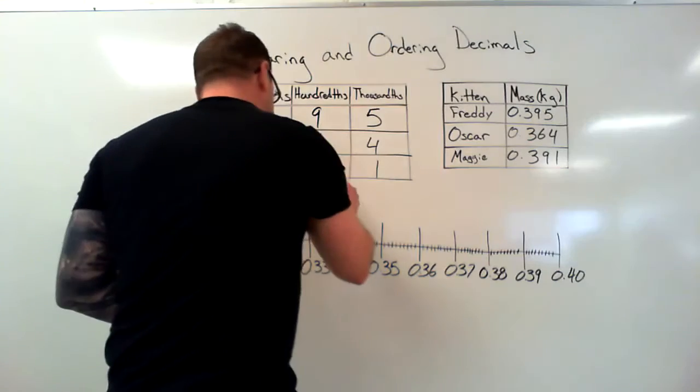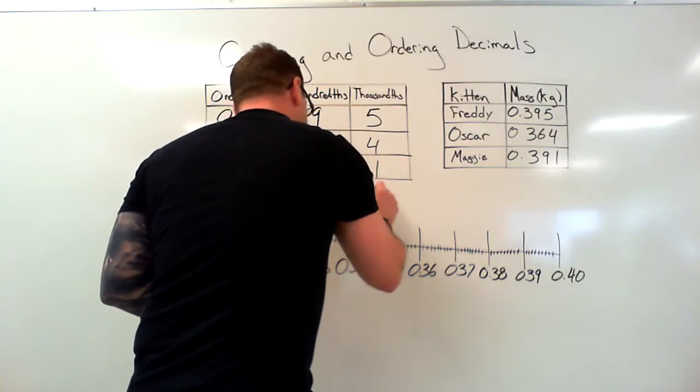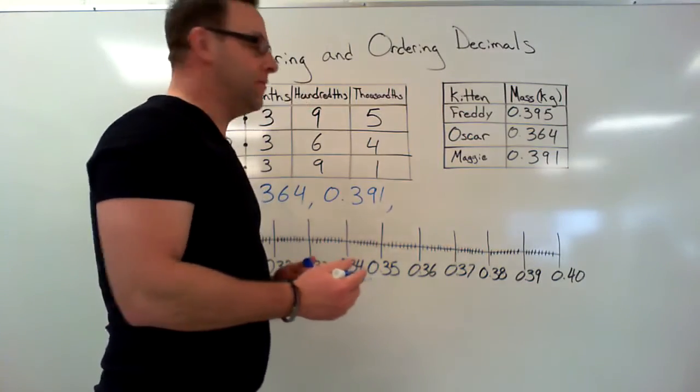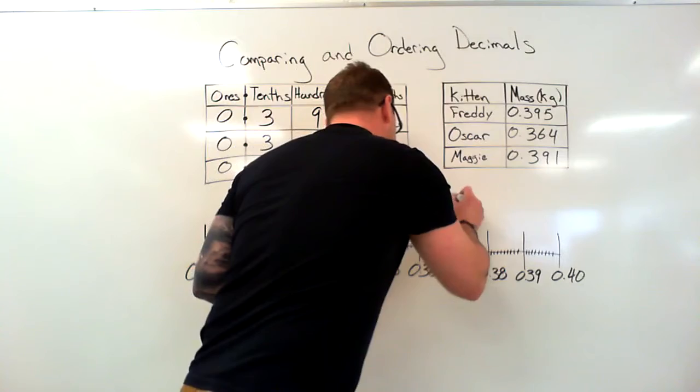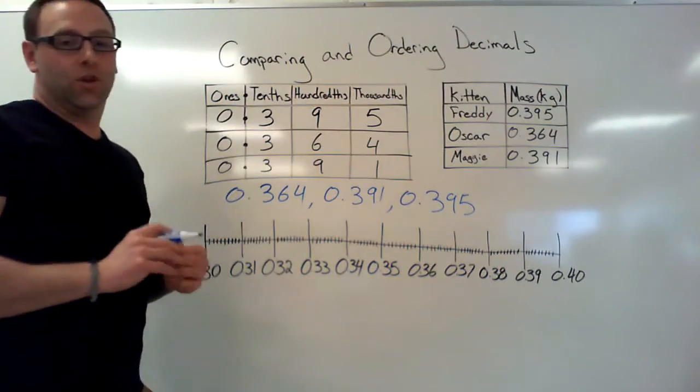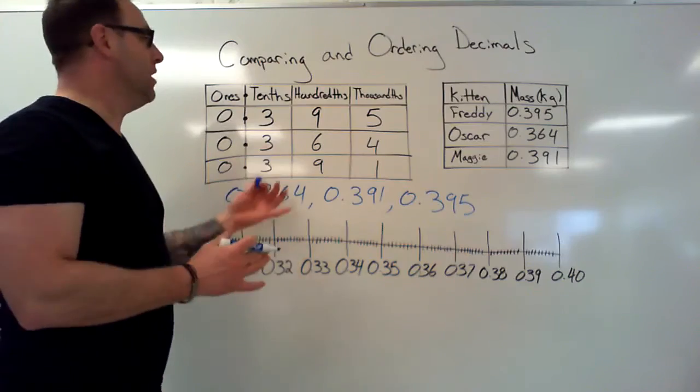That means zero point three nine five is our biggest. Okay, so right now we've already compared the weight of our kittens.